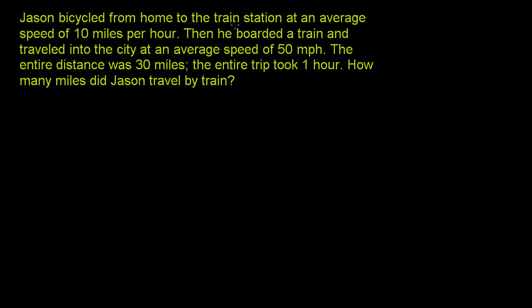Jason bicycled from home to the train station at an average speed of 10 miles per hour. Then he boarded a train and traveled into the city at an average speed of 50 miles per hour. The entire distance was 30 miles, and the entire trip took one hour. How many miles did Jason travel by train?